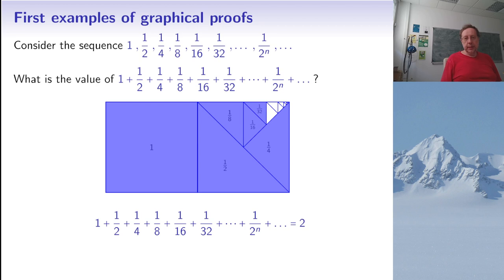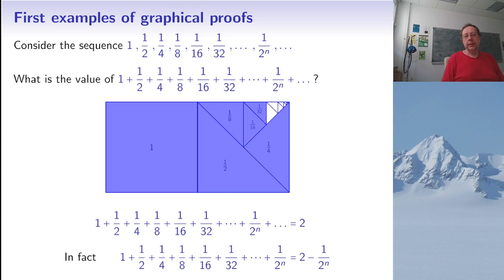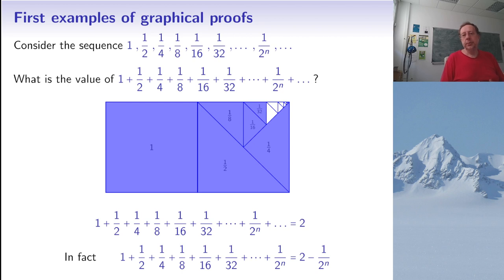So the answer is that this infinite series equals two. More precisely, the series converges to two. If we stop at one over two-to-the-n, the remaining triangle also has area one over two-to-the-n, so the sum up to that point equals two minus one over two-to-the-n, and as n goes to infinity, that term goes to zero.